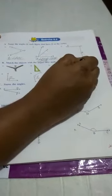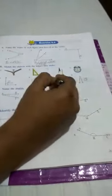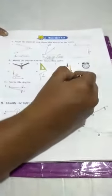And here the hands of a clock is a straight angle. So, this is a straight angle. This will be the fourth one. Now, C. Name the angles.